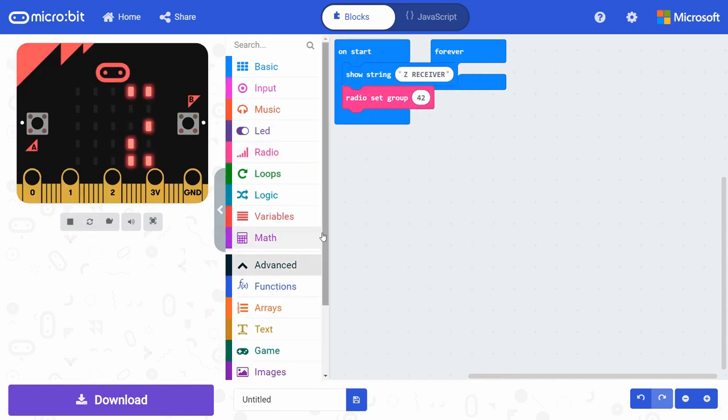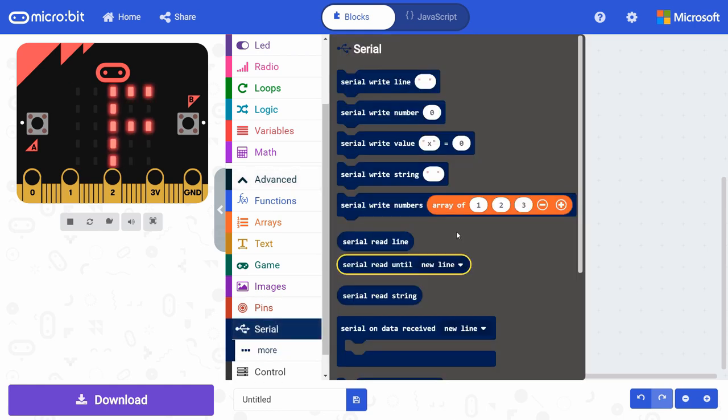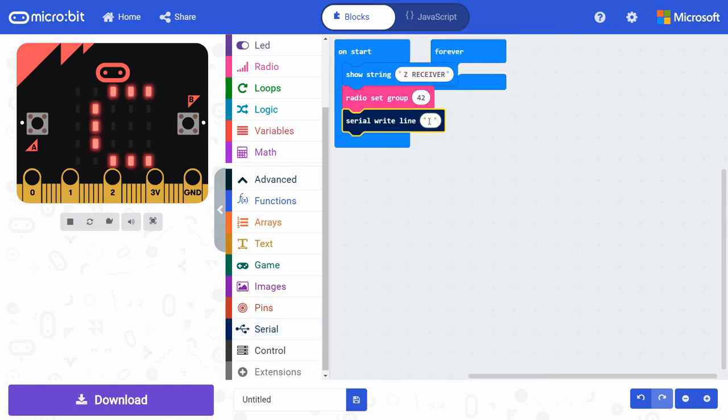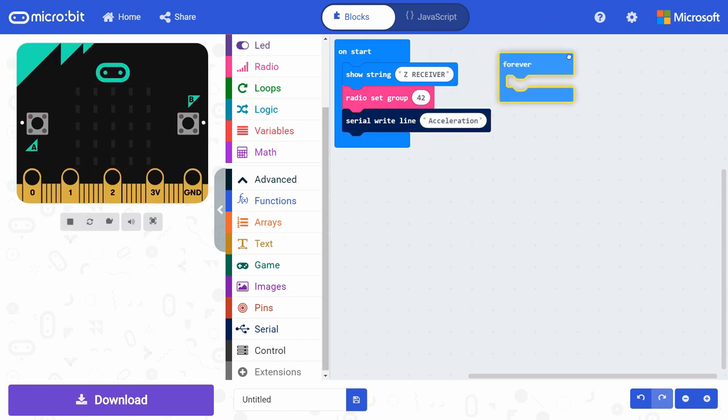Under advanced, go into serial and get a serial write line block. Put that under radio set group and change the string to acceleration. This will send that word to our computer to let it know that we want to start receiving serial data over the USB lines.